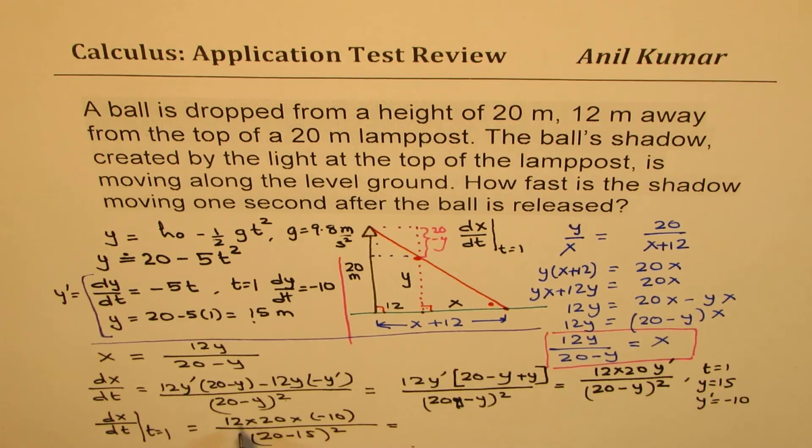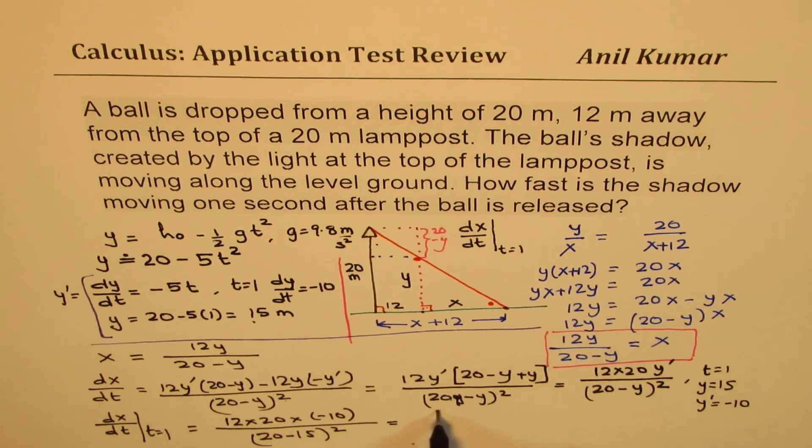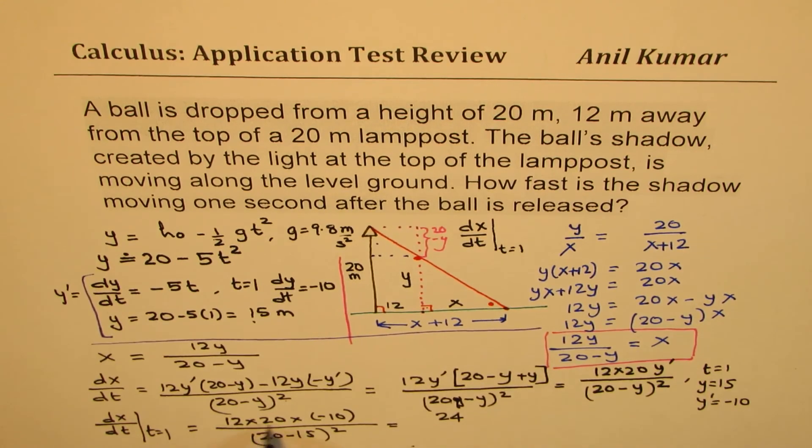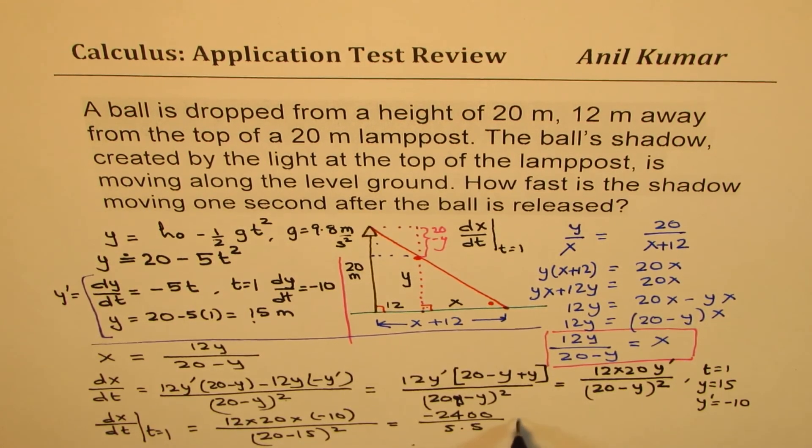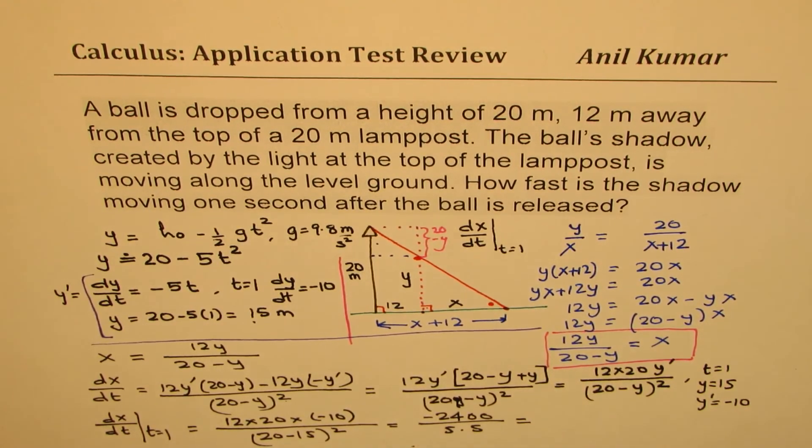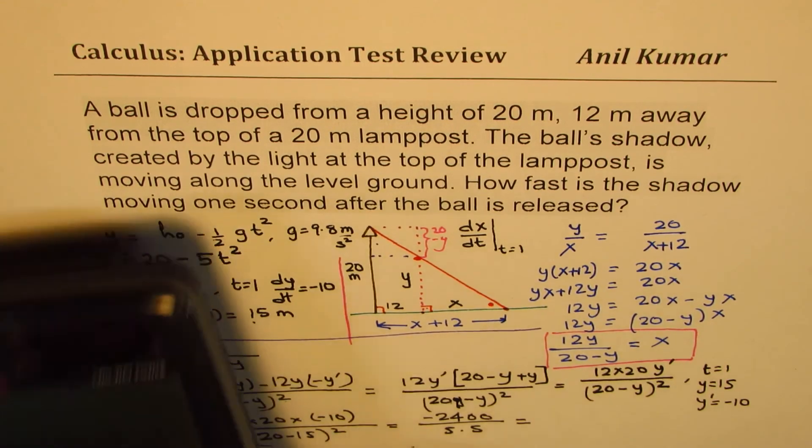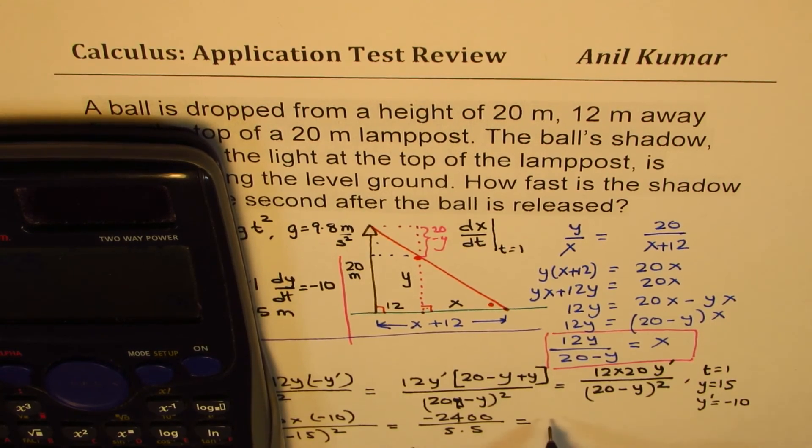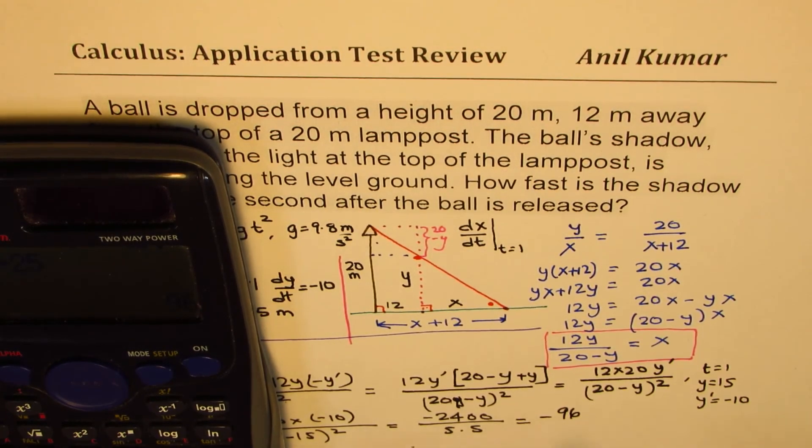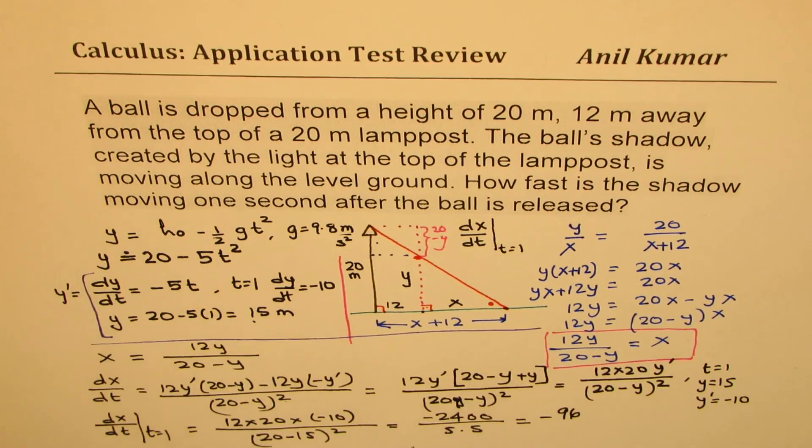Now that gives me 2400. So 2400 with a negative sign. And this gives me 5 squared, 5 times 5, 25. So let's do this division and get our answer. So it is 2400 divided by 25 equals minus 96 meters per second.